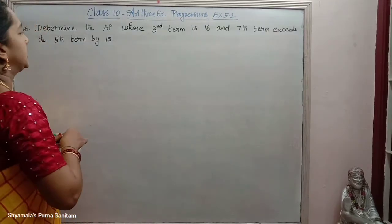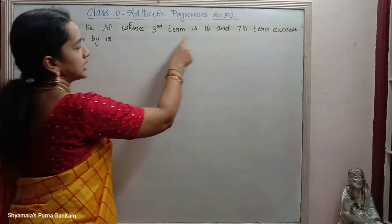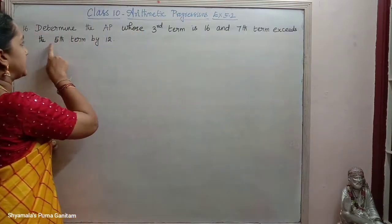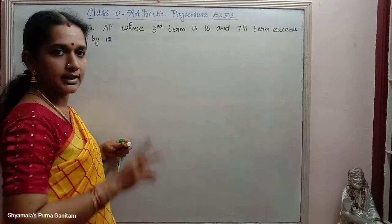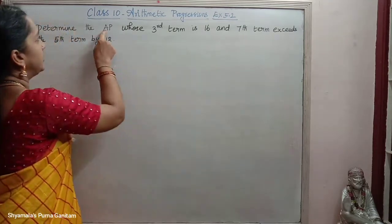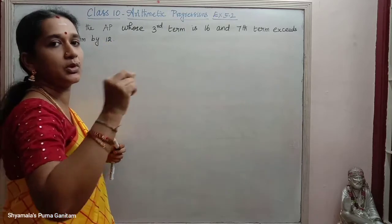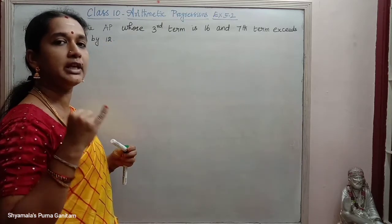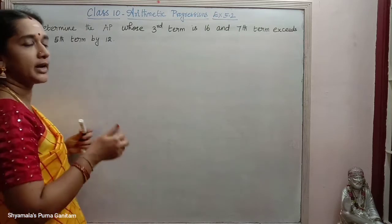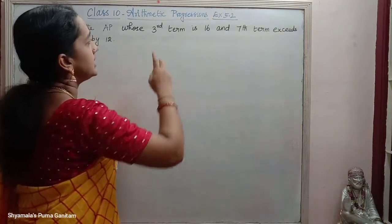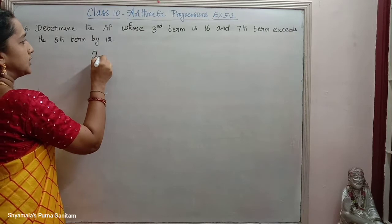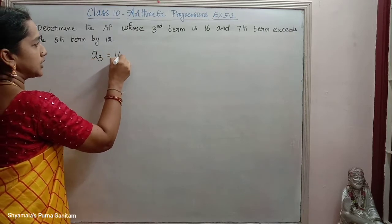Next problem: Determine the AP whose third term is 16 and 7th term exceeds the 5th term by 12. These are the two conditions given and we are asked to find the AP sequence. For that we need A and D. So the third term gives us A3 is equal to 16.